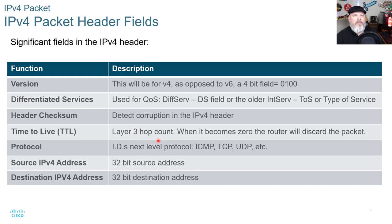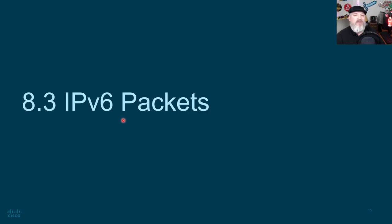The TTL field is in place to ensure packets don't bounce around the internet forever. Once a packet reaches its hop limit — its time to live — it gets discarded at the next router. The protocol field identifies the next level protocol: ICMP, TCP, or UDP. The source and destination addresses are each 32-bit fields.